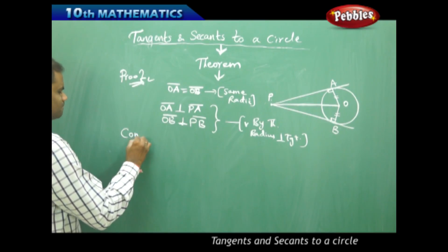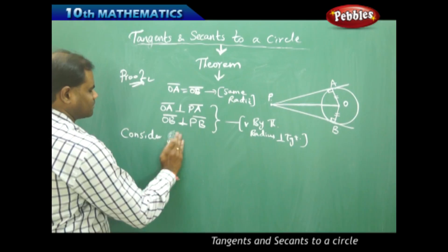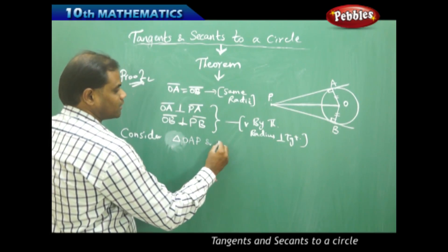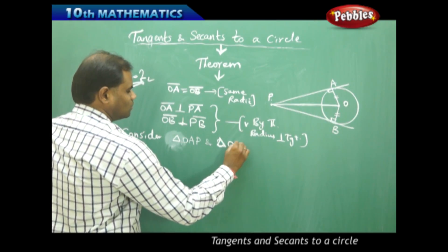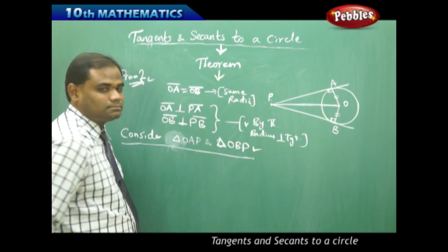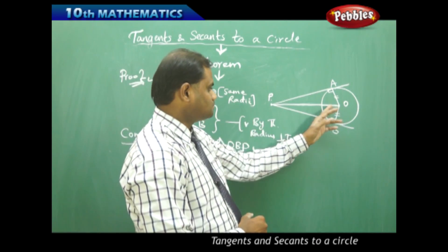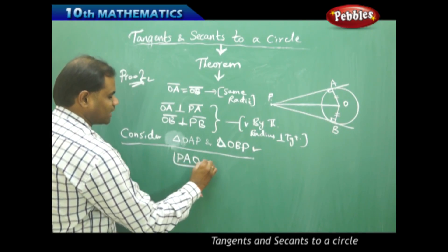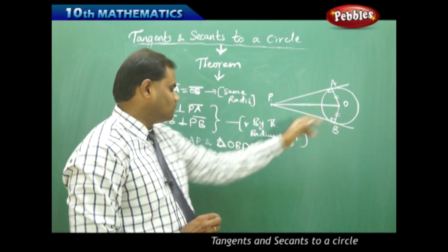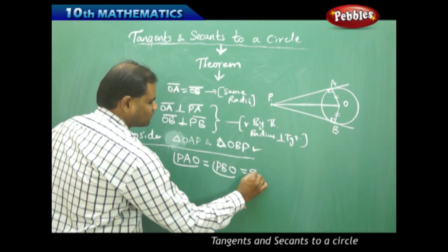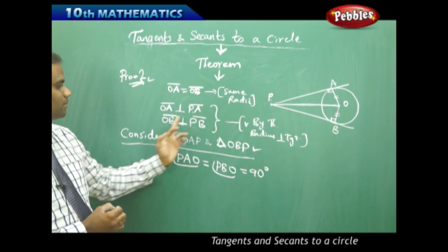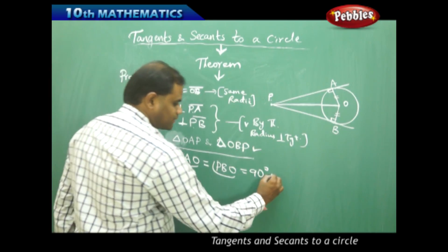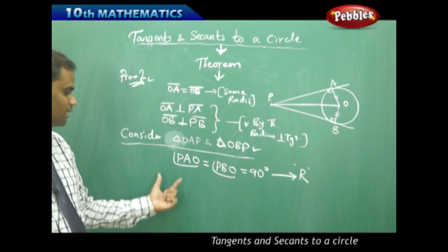Consider triangle OAP and triangle OBP. The angle PAO in the first triangle is equal to the angle PBO in the second triangle, because each one of them is 90 degrees — as already proved that the radius is perpendicular to the tangent. So one angle in each triangle is a right angle.